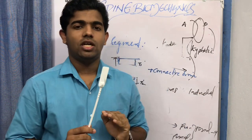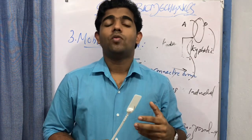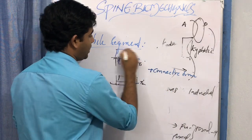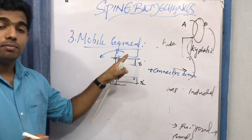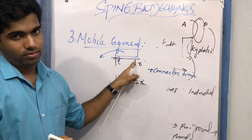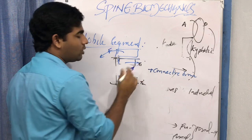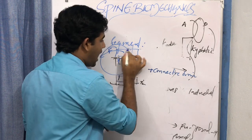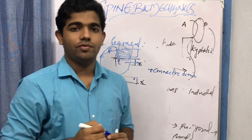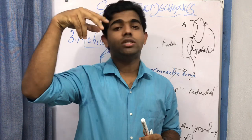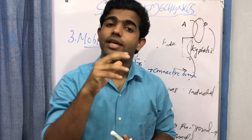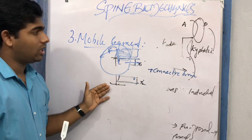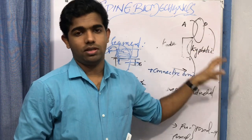Movements in the vertebral column are labeled with respect to the superior moving vertebra. For example, if C7 is moving anteriorly for flexion, even if the spinous process moves posteriorly, we still label the movement as flexion. We always take the body of the vertebra as our reference — not the spinous process — when labeling movements.